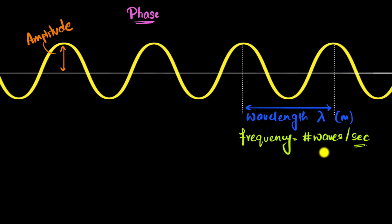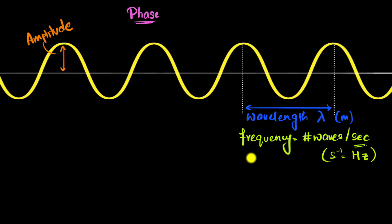The unit of frequency is number of waves per second — or second inverse — but when used for frequency we call it hertz. For example, if frequency is 10 hertz, it means 10 waves are passing a given point per second. Now, if you know the wavelength and the frequency, you can figure out the speed of the wave.